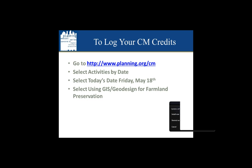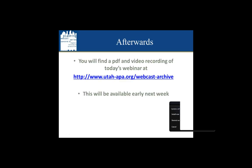To log your CM credits for attending today's webcast, please go to www.planning.org/cm and select today's date, Friday May 18th, and select today's webcast, Using GIS-Geodesign for Farmland Preservation. This webcast is available for 1.5 CM credits. We're also recording today's webcast, and it will be available along with a PDF of the presentation at www.utah-apa.org/webcast-archive.